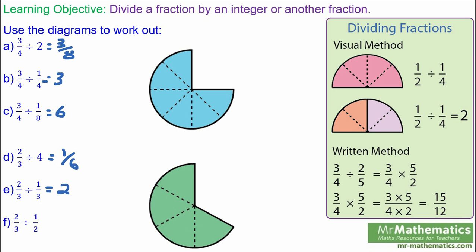For question F we have two thirds divided by one half. Here you've got one half of the entire circle, plus the sector left over. Of the other half, the sector is one third. So two thirds divided by one half is going to be one and one third, or four over three.